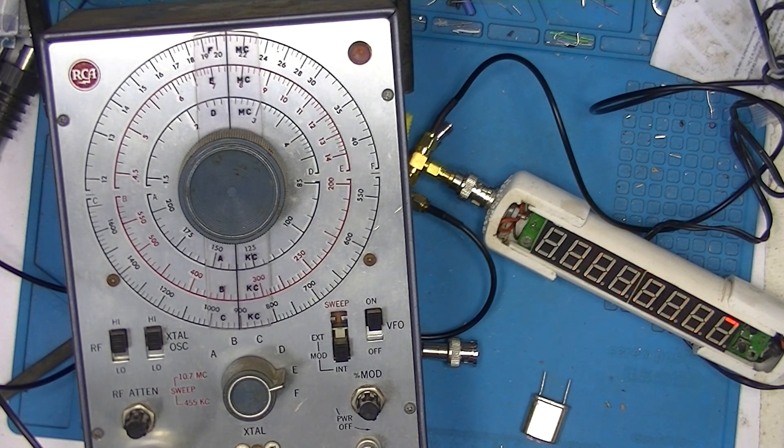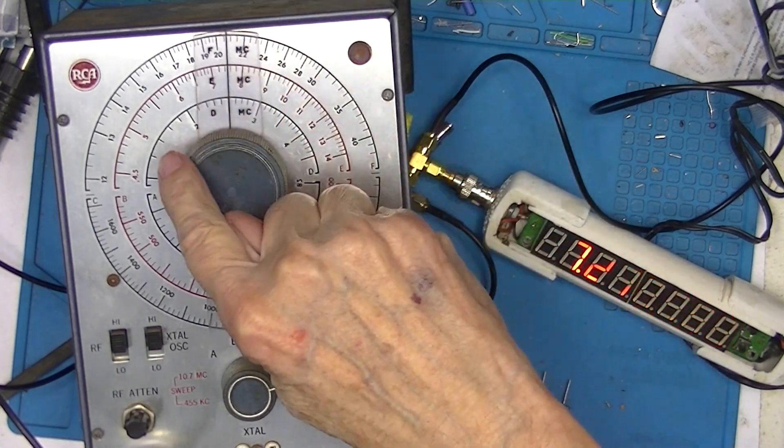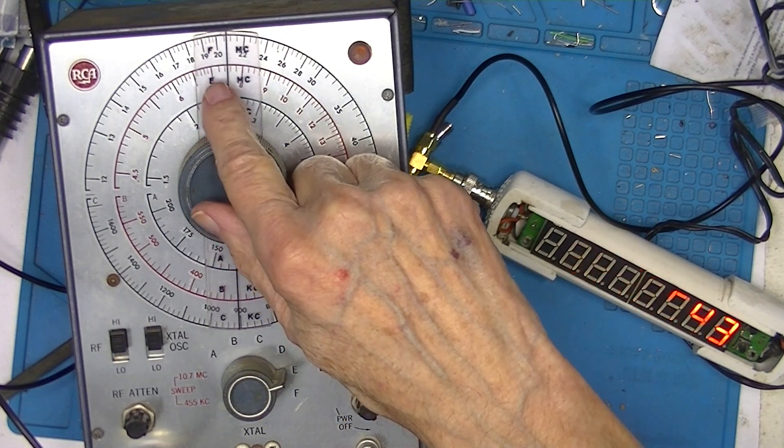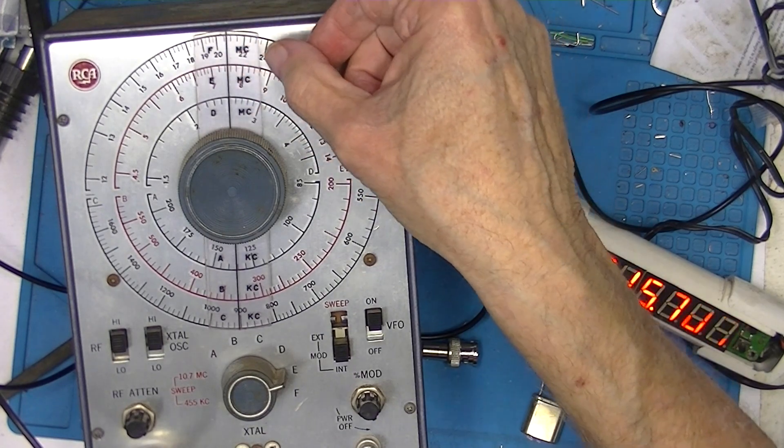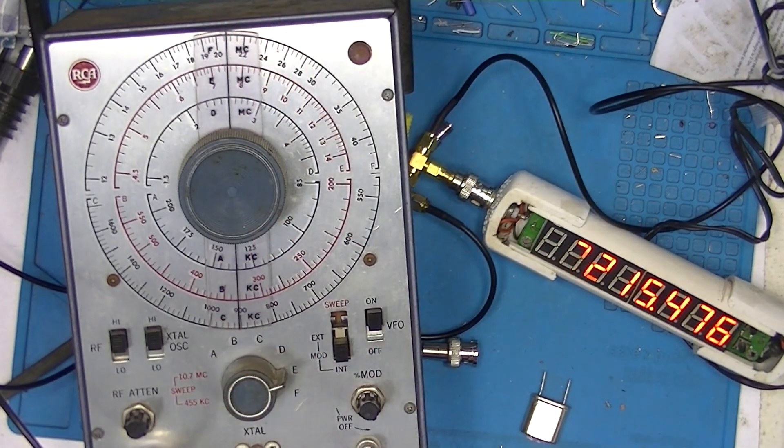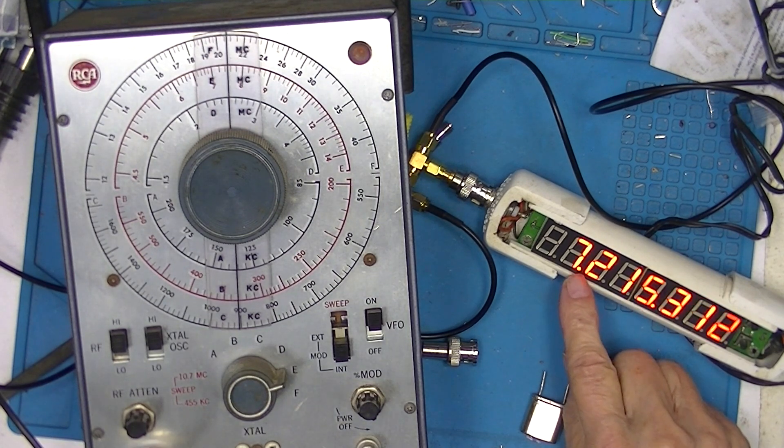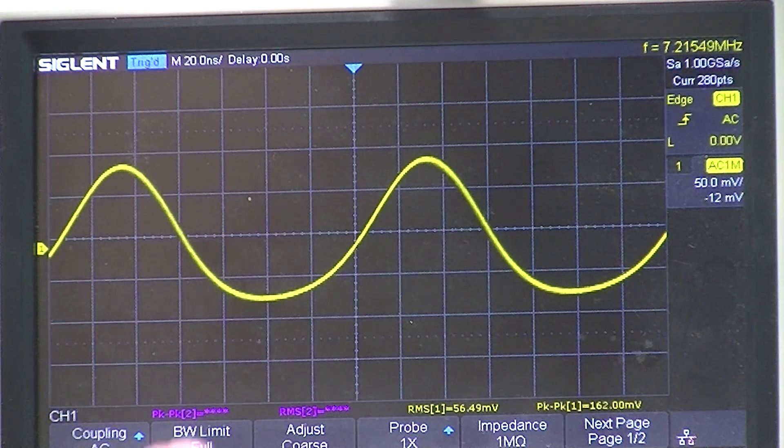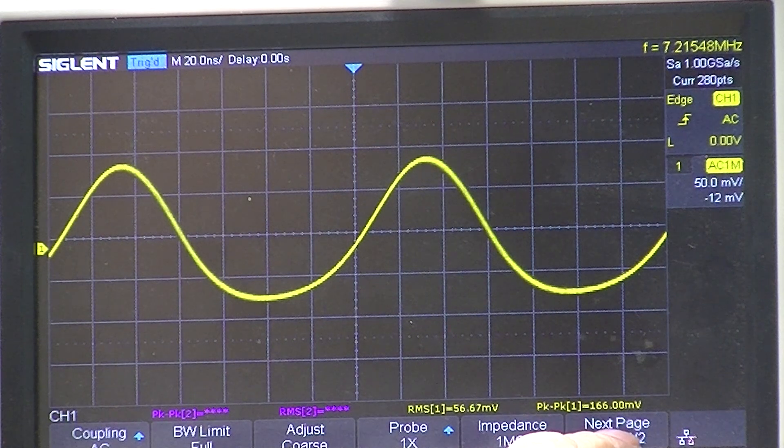Powered up, I've got the cursor in the middle of the range and I've got it set on E, which is here, which should be 7.5 megahertz. The output's connected to a frequency meter reading 7.2 MHz, to the oscilloscope showing 7.2 MHz and about 164 millivolts peak to peak.